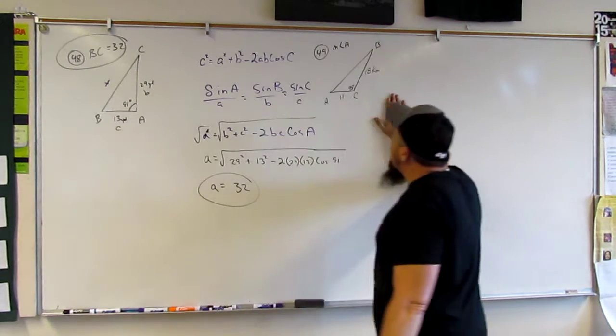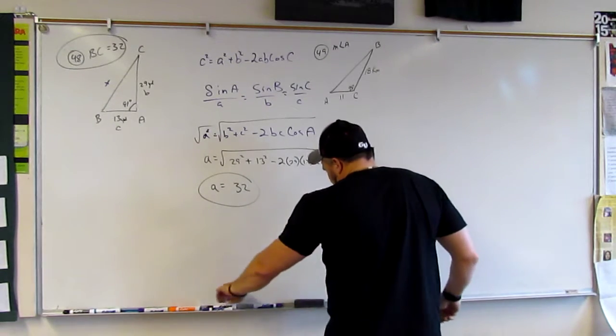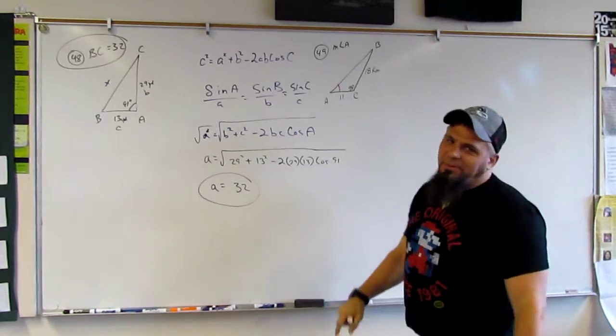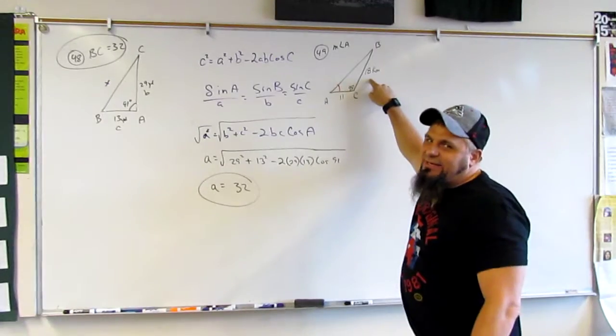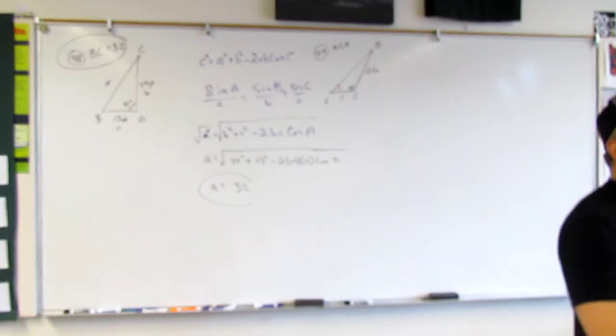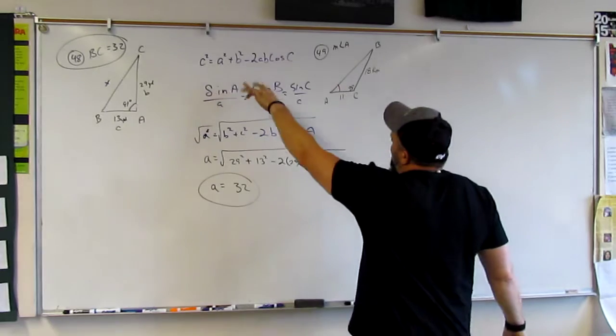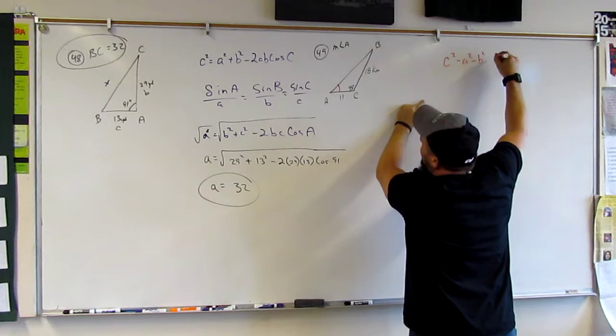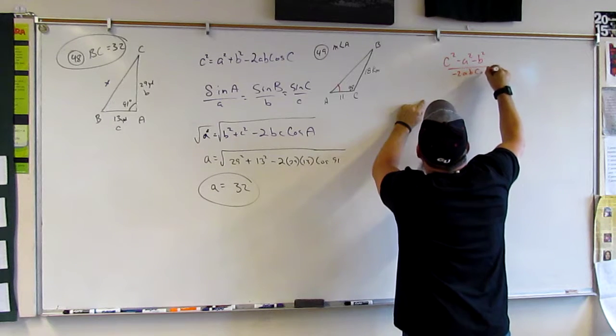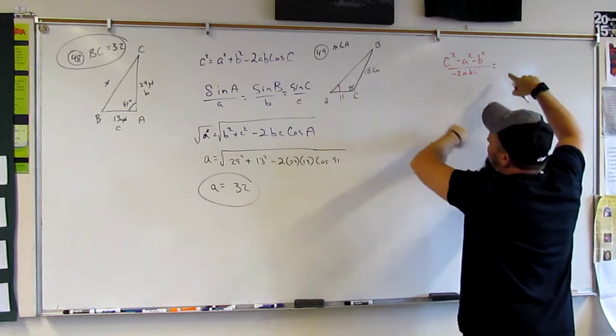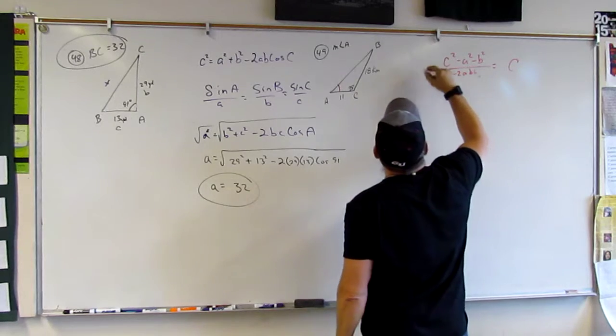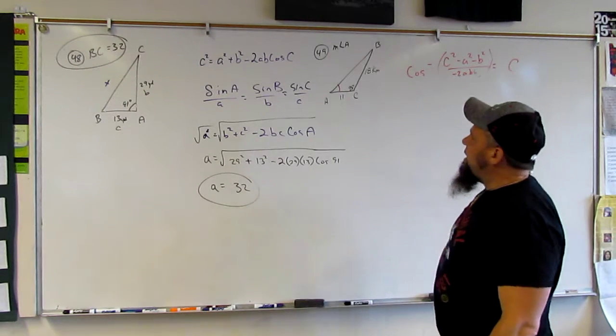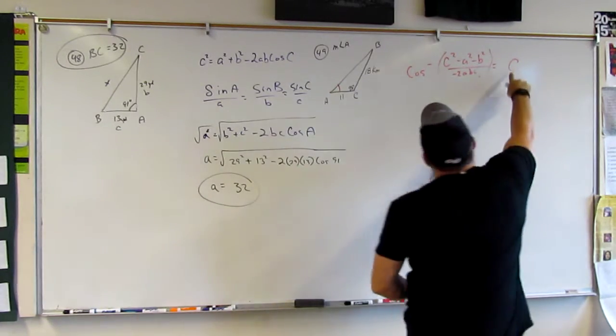The next problem, again, we're looking for angle A. That would be here. Again, we're given the same type of problem. We have these two angles, or these two sides, but we don't have this angle. So, again, this is a lot of cosines, but we're looking for an angle this time. So, remember, we can take this, and we can rewrite it, moving all this over. But the problem is, this is for C, and we're looking for A.